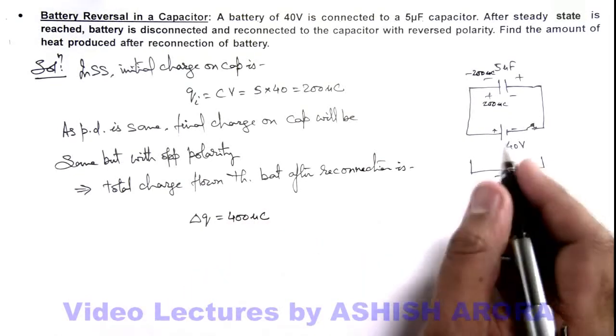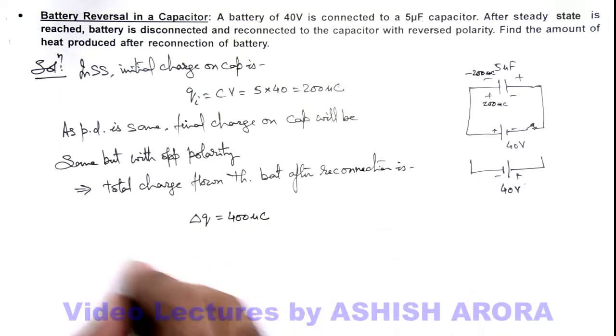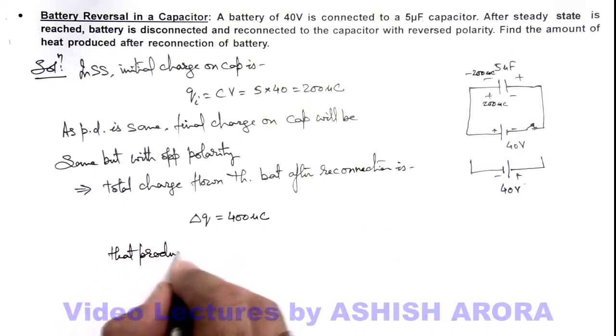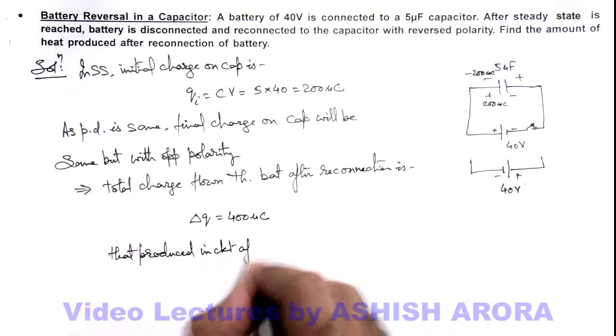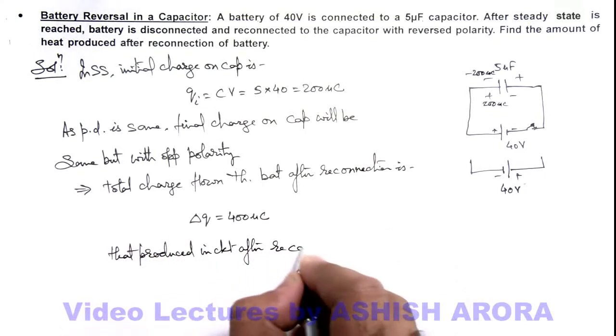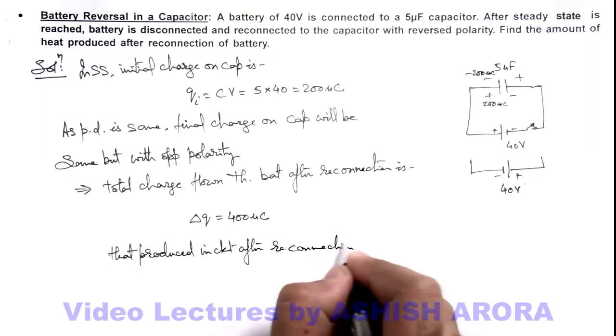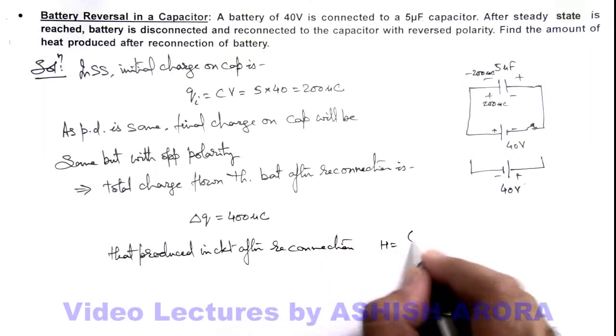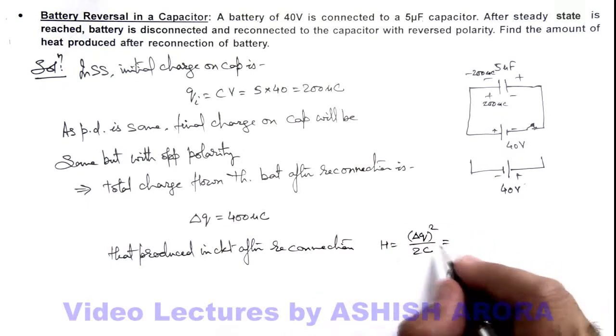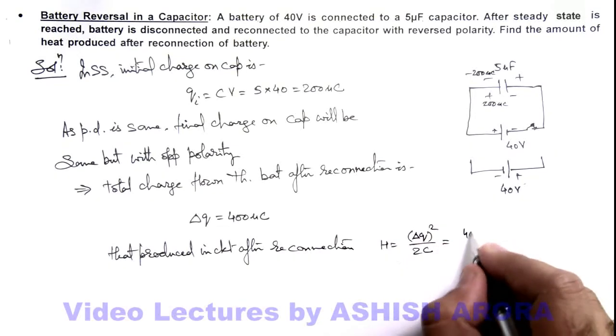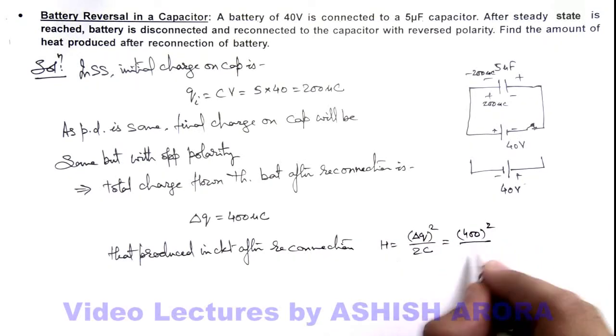And in this situation if we calculate the heat produced in circuit after reconnection, this can be given as H which is delta Q whole square by 2C. The direct relation we already studied in the concept videos. So here on substituting, this is 400 whole square by 2 into 5.